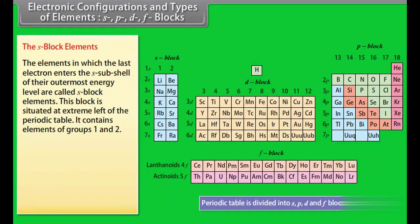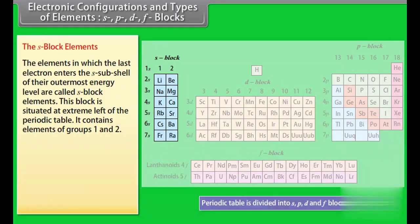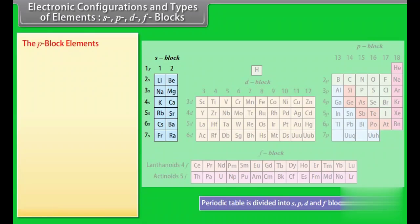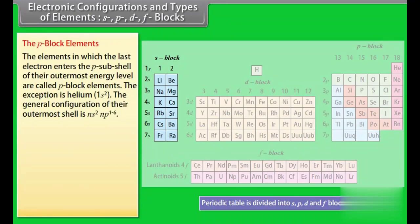The S block elements: The elements in which the last electron enters the S subshell of their outermost energy level are called S block elements. This block is situated at the extreme left of the periodic table. It contains elements of groups 1 and 2. The elements of group 1 are called alkali metals, whereas the elements of group 2 are called alkaline earth metals.